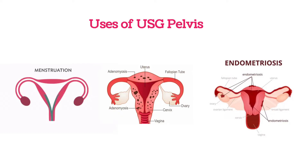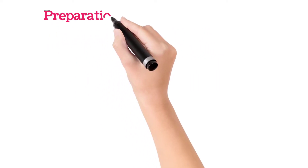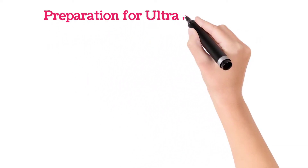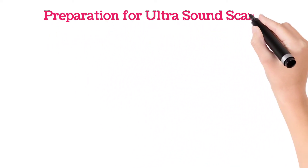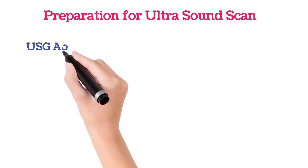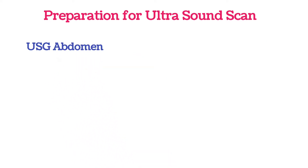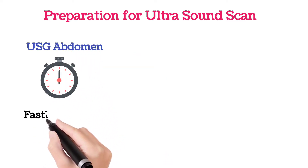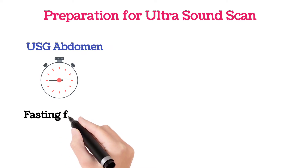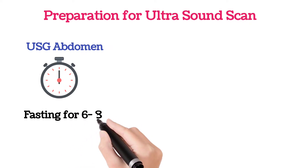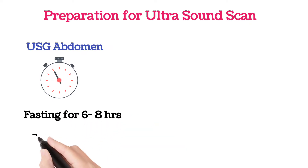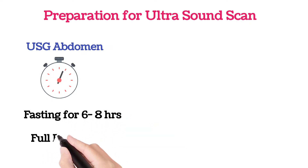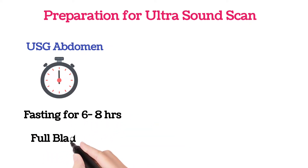How should we prepare for an ultrasound scan? People who are getting USG abdomen should do fasting for 6 to 8 hours, and at the time of scan there should be a full bladder — that is, we should drink at least 4 to 6 glasses of water or coconut water.